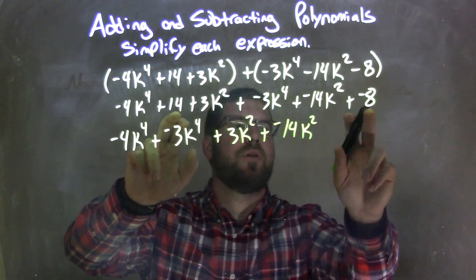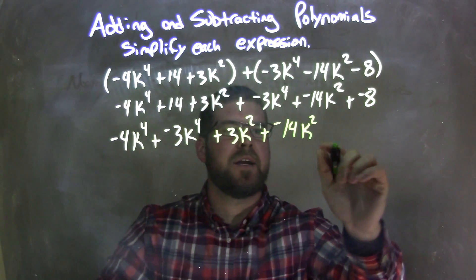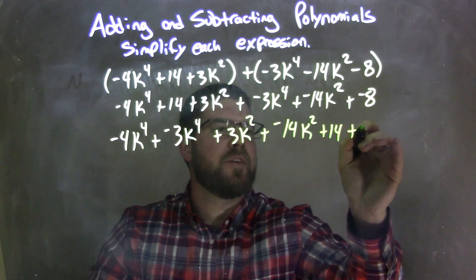Lastly, we're just left with our numbers here. 14 and negative 8. So we have plus 14, and plus a negative 8.